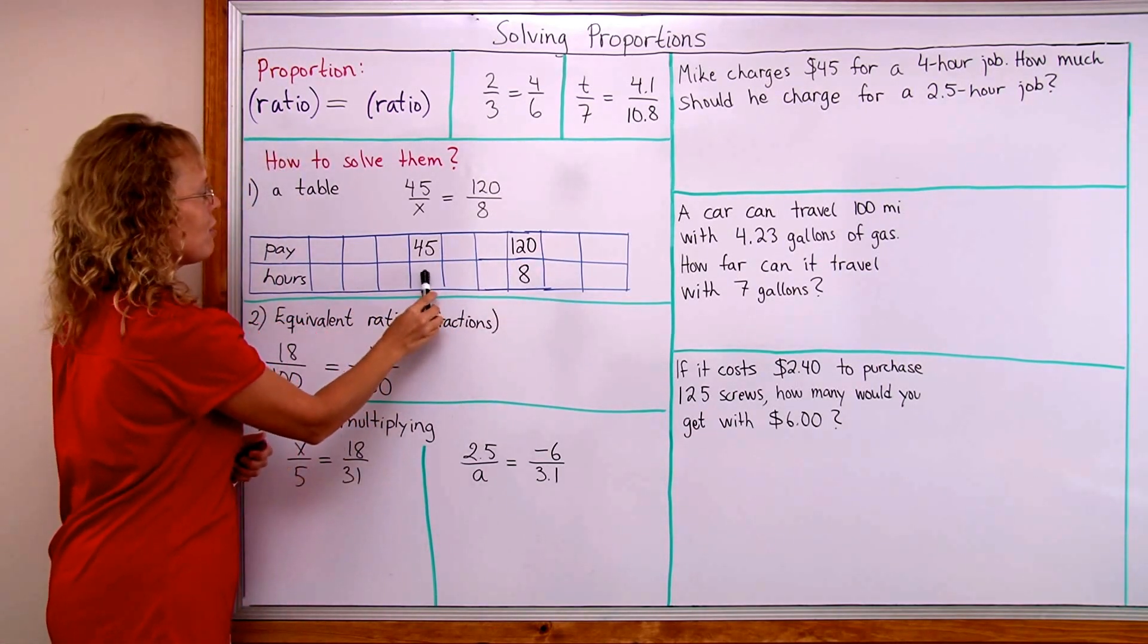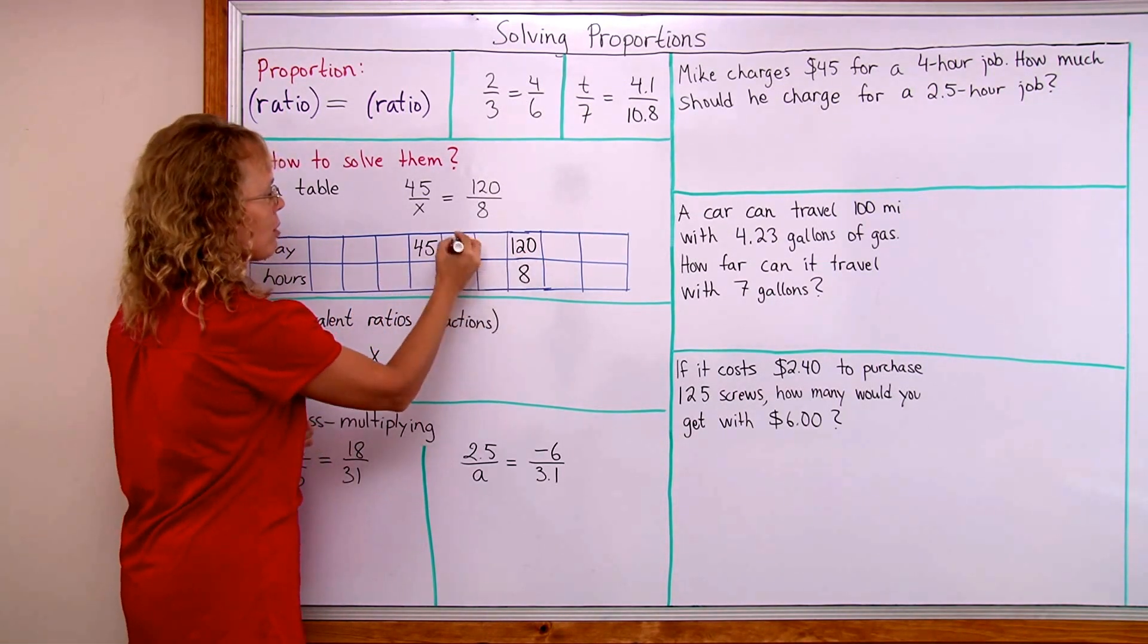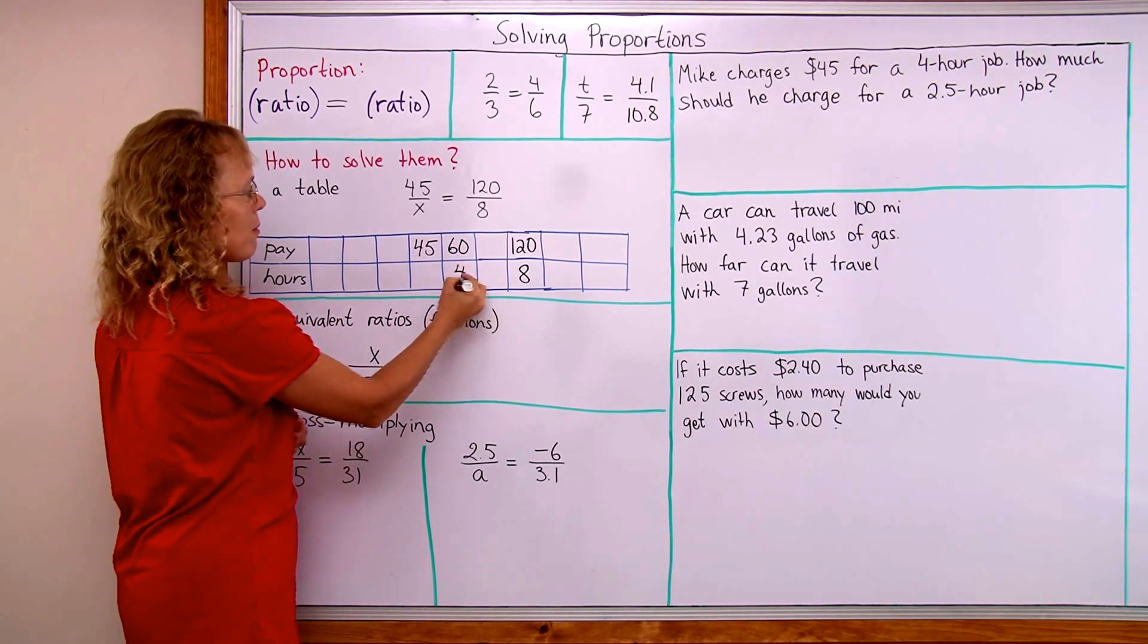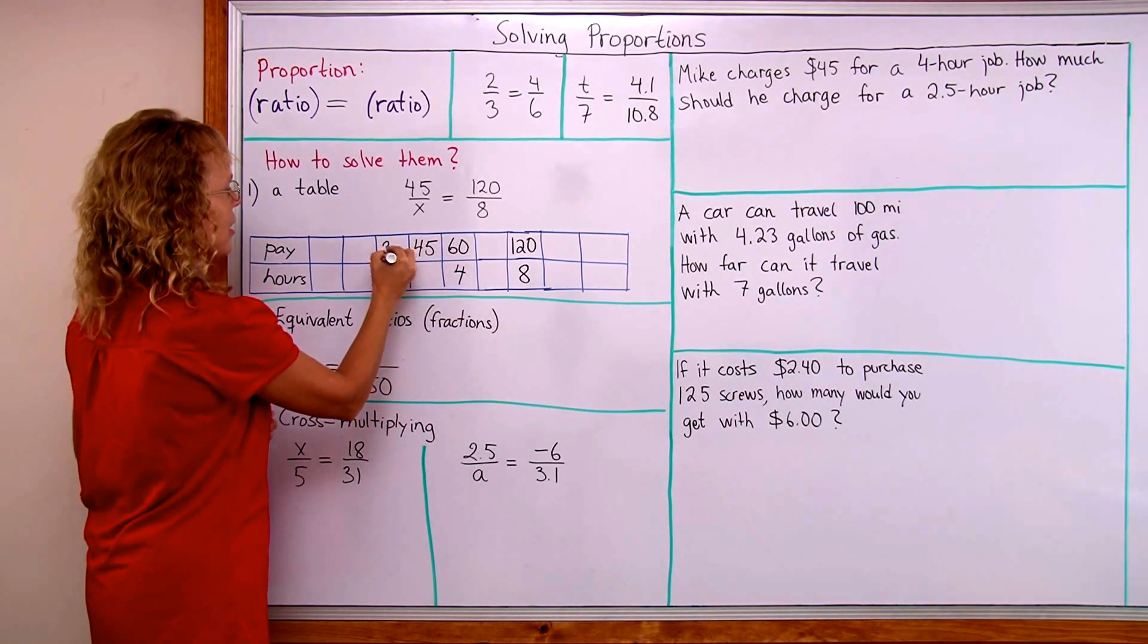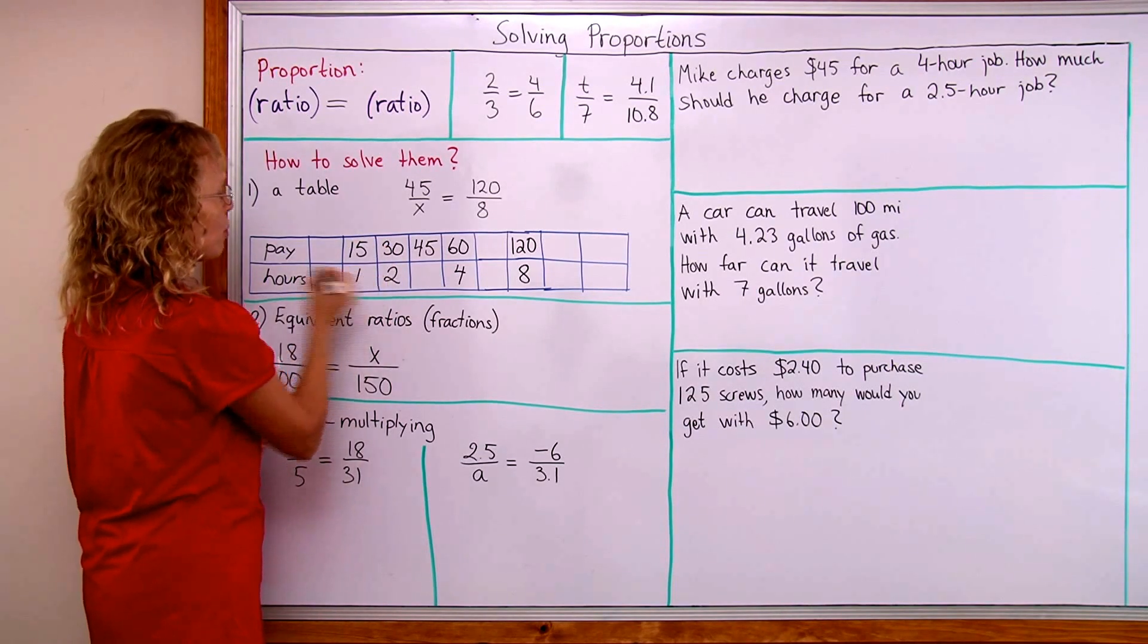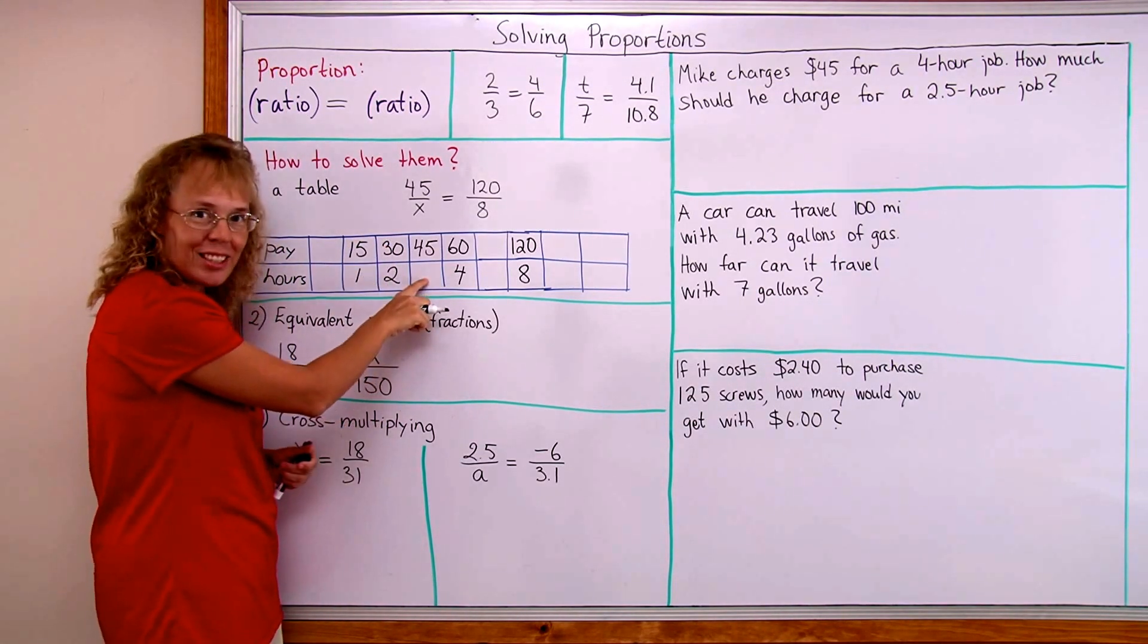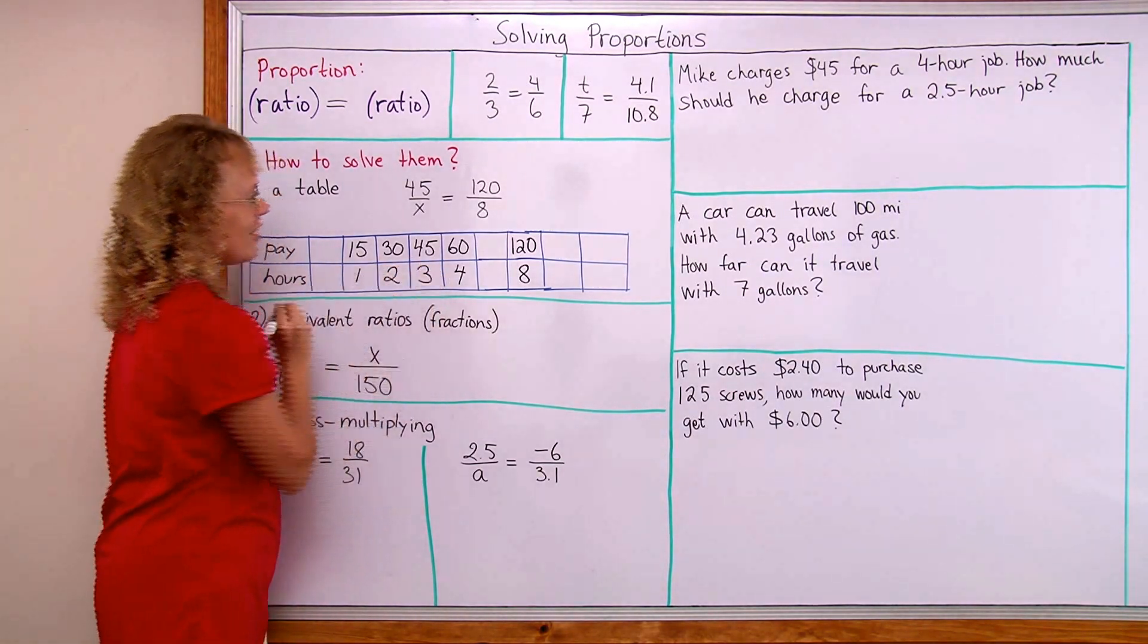So I would put this into the table. This is my unknown that I need to find out and then I can think different things. For example, I could take half of this. If it is 60 dollars then it would be 4 hours, right? And then I could take half of 60 and get 30. 30 dollars for two hours. Take half of that and get 15 dollars for one hour and then surely by this point you can see what goes here, right?